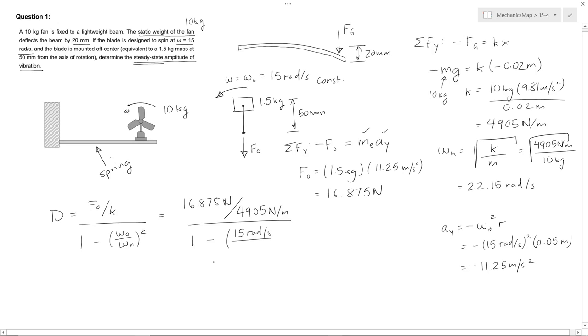1 minus our omega naught is the speed that the fan is going, 15 rads per second. And omega n is 22.15 rads per second. And that's all squared. And we end up with an amplitude of 0.00635 meters or 6.35 millimeters.